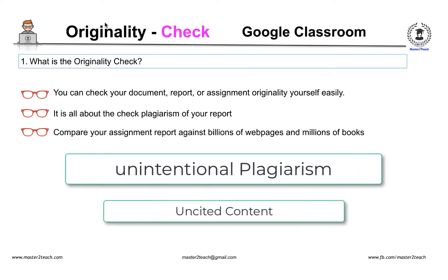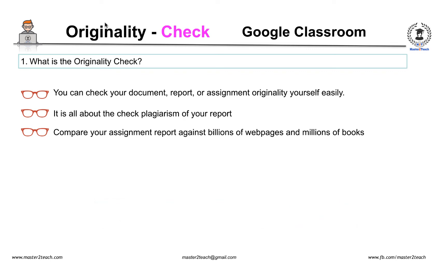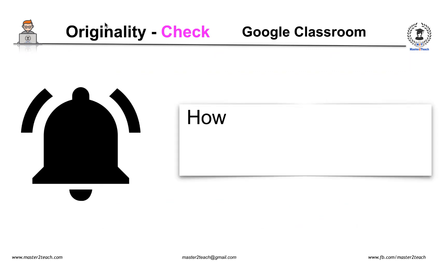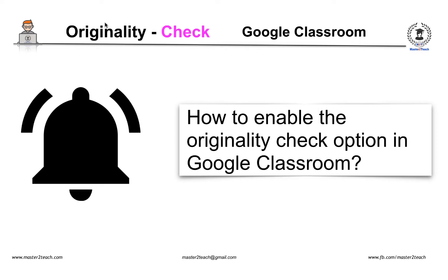This helps students to identify unintentional plagiarism and uncited content before submitting their assignment report. Originality reports link to all detected web pages and flag uncited text, which will help students as well as teachers to see where students used source material and where citations are present or missing.